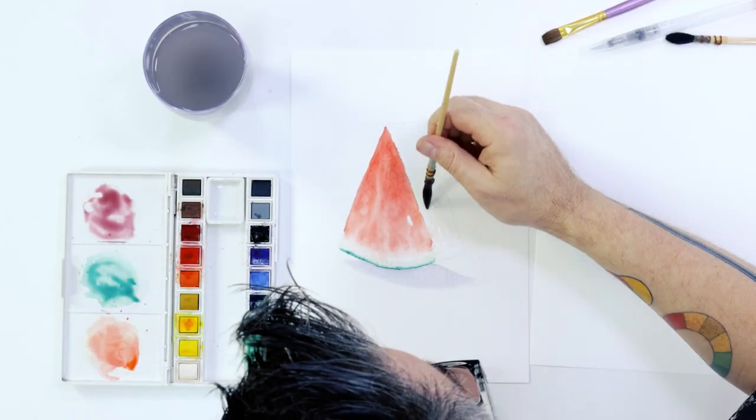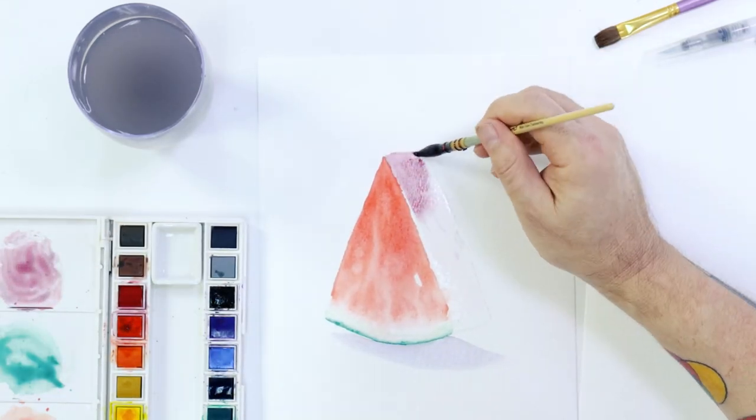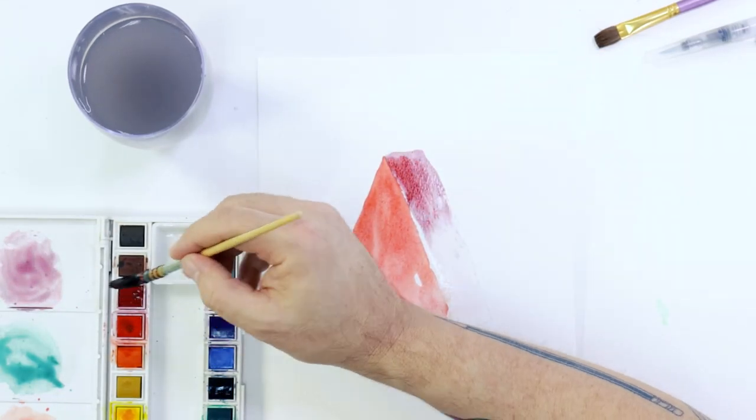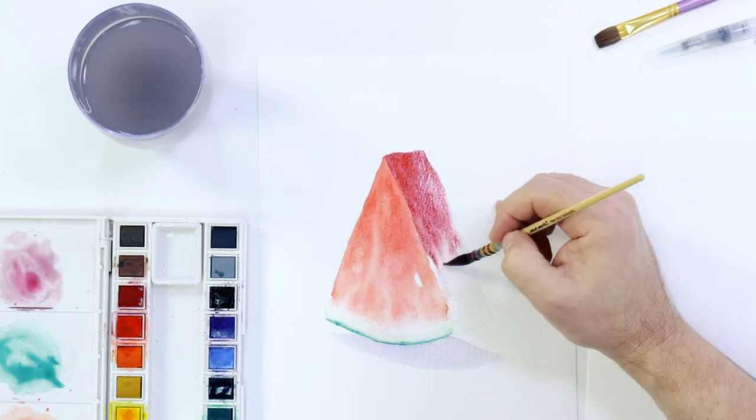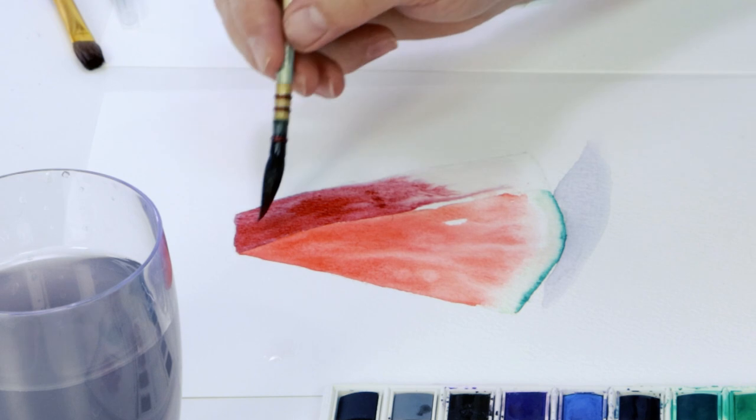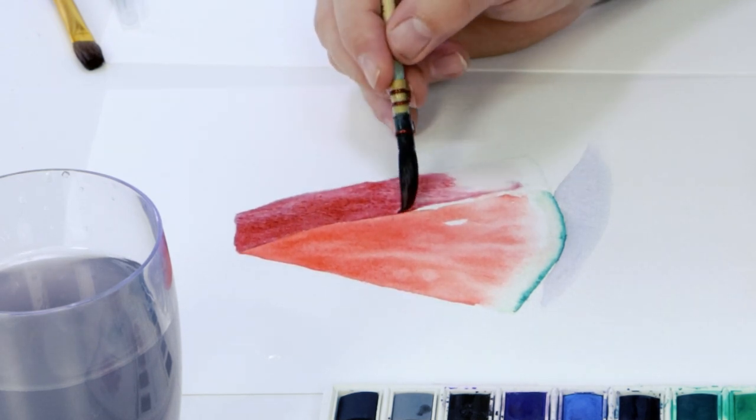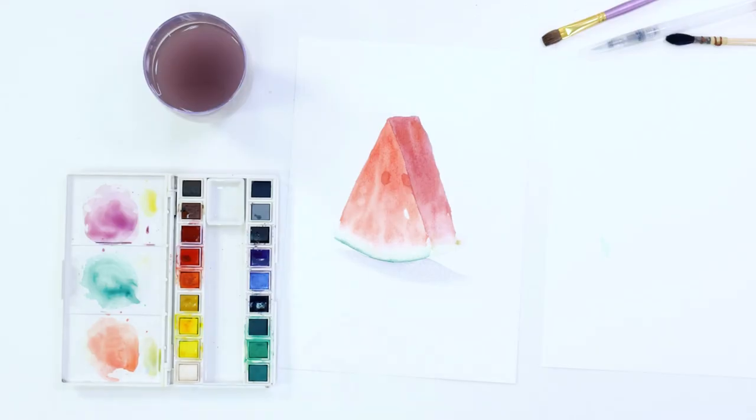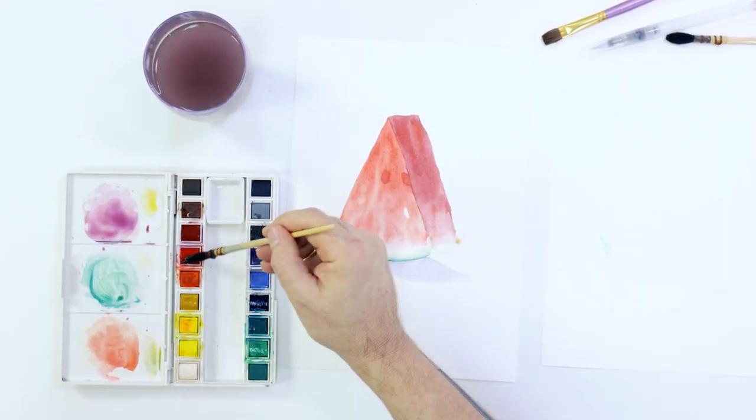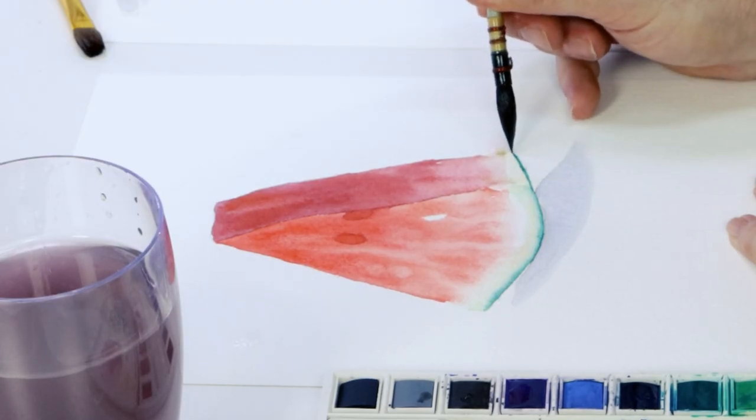For the side of the watermelon in shadow, lay some clean water into the area and then create a mix from dark red, mid red and a touch of dark blue and paint this into the area. Again don't take the red right down to the bottom. Create a mix from dark green and black and lay this over the base. This will be the outer part of the skin.